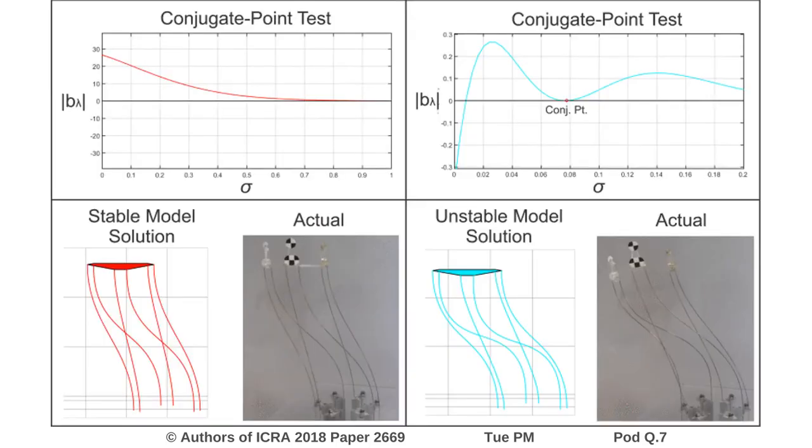We validate our approach experimentally on a six-degree-of-freedom parallel continuum Stewart-Gough platform. This figure shows the robot before and after instability. On the right, the boundary condition partial derivative matrix is singular along the interval, indicating instability.